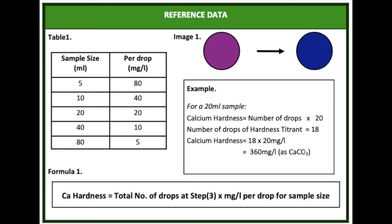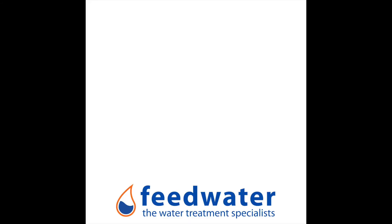Using the formula on the method sheet, calculate the calcium hardness concentration. For a 20ml sample, each drop represents 20 ppm of calcium hardness. For example, if the test took 18 drops, then you would multiply 18 by 20, which would give a calcium hardness level of 360 mg per litre.